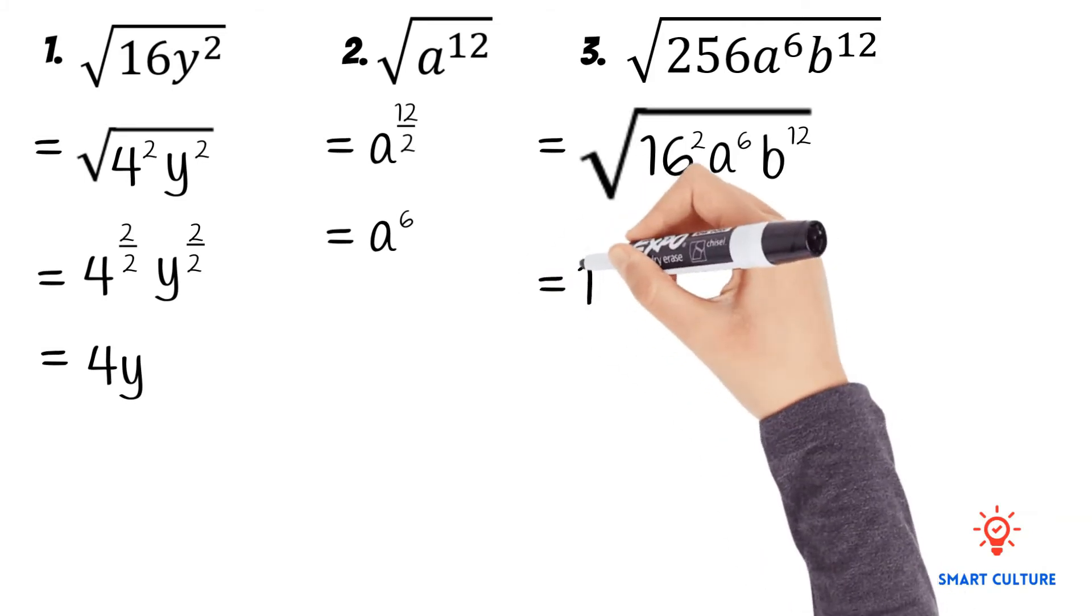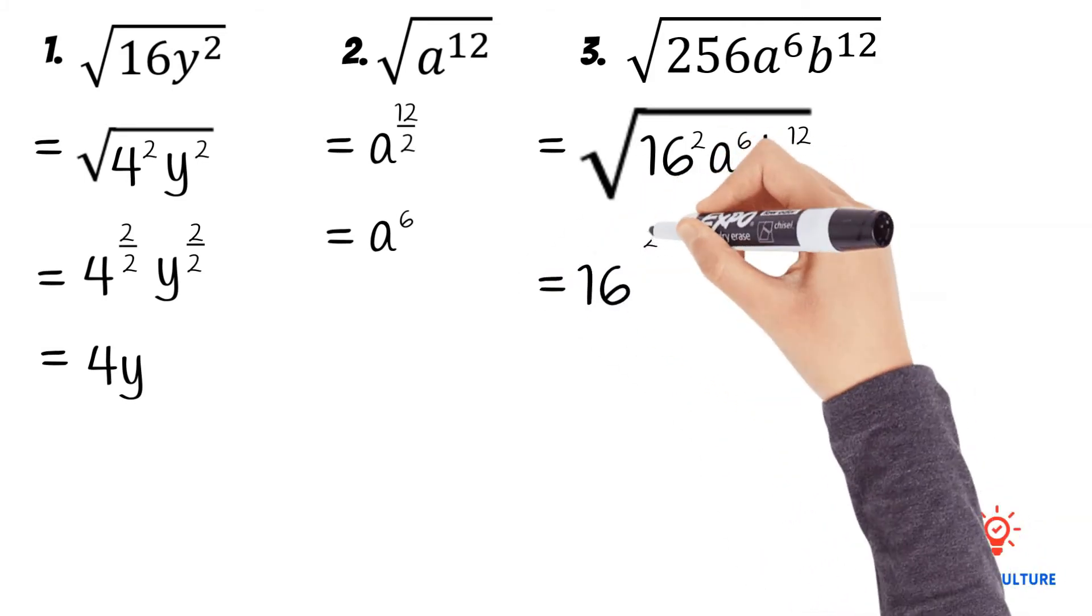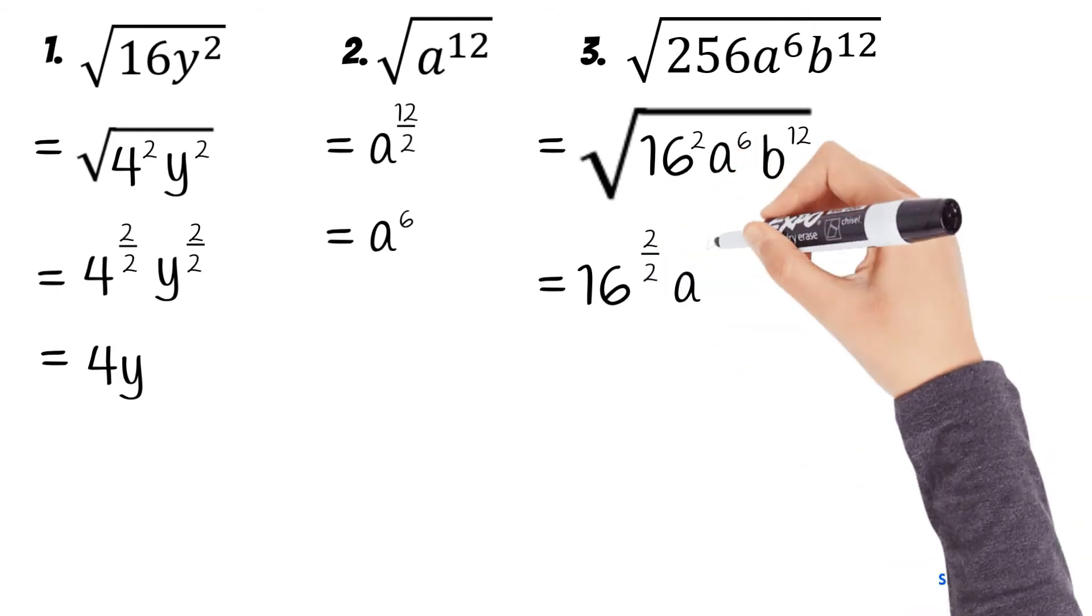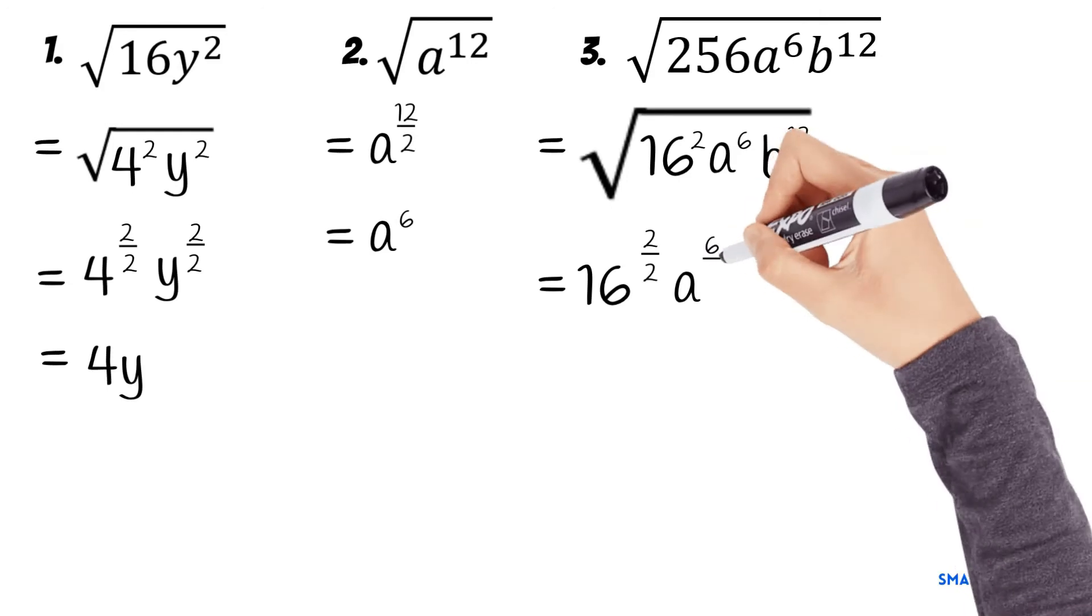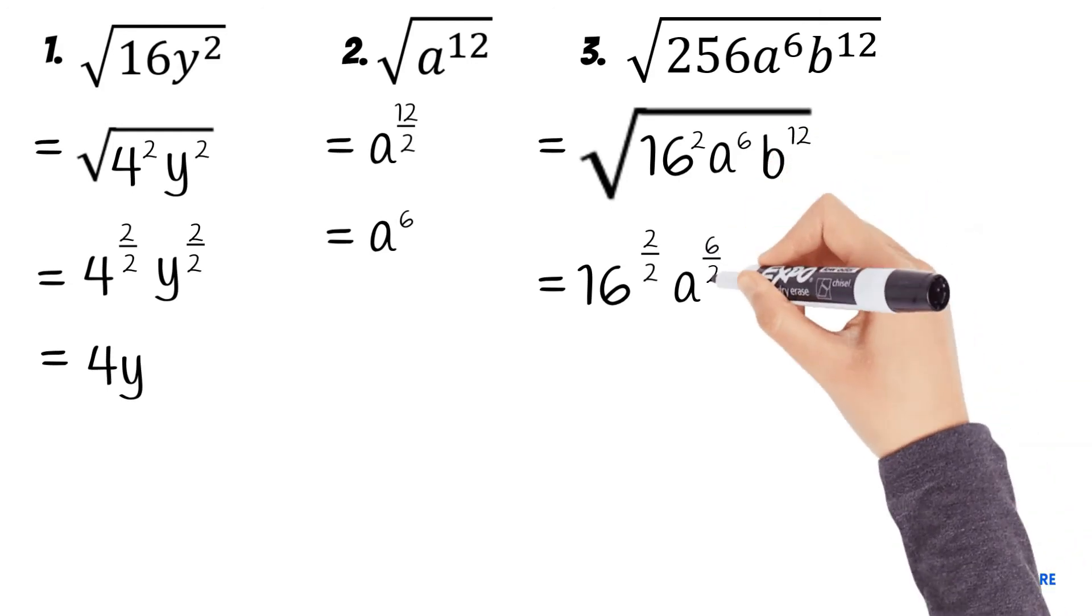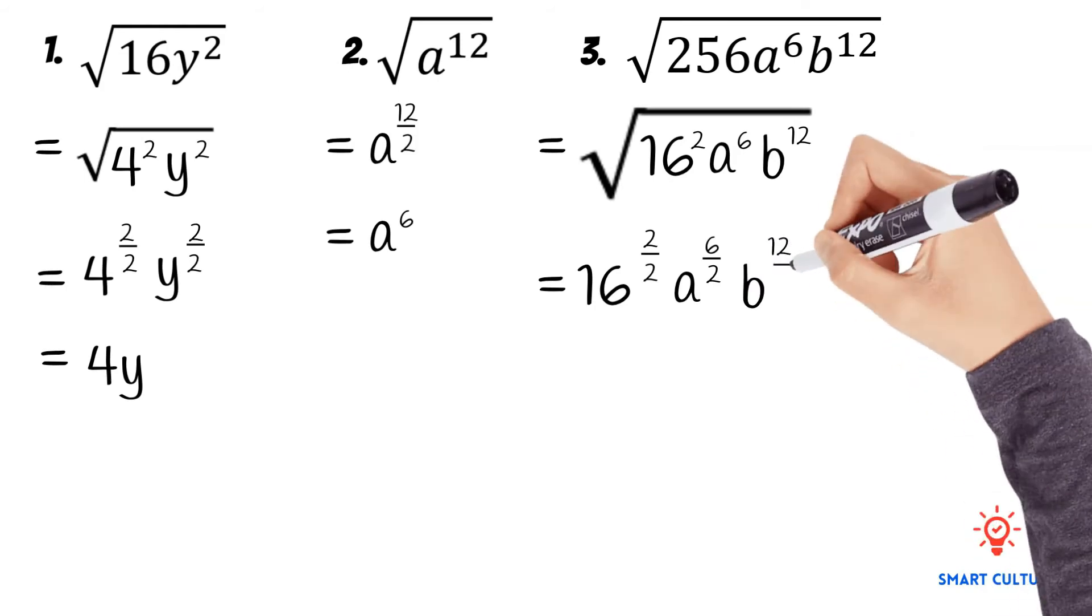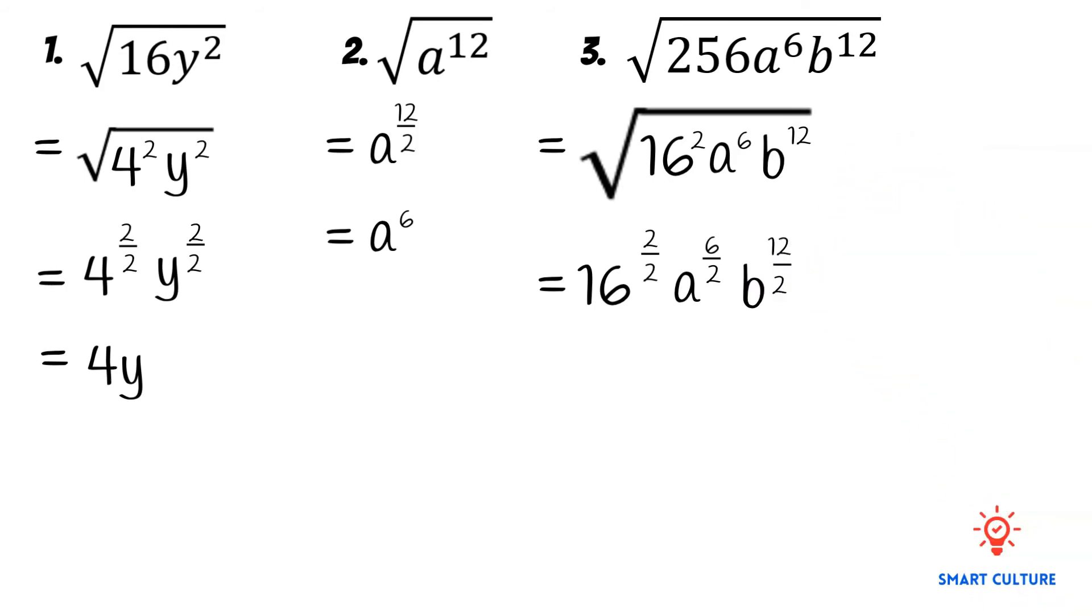The number 256 is a perfect square. So let's write the fractional exponents. We have to divide the exponent by 2 since this is a square root. 16 to the power of 2 divided by 2, a to the power of 6 divided by 2, and b to the power of 12 divided by 2.